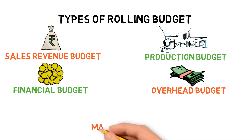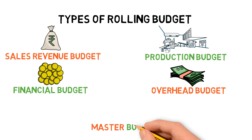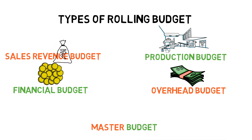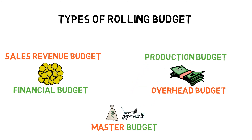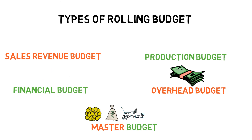And finally, we have a master budget. Master budget means a budget which covers all aspects — that is sales, finance, production, overheads, etc. A rolling master budget can be prepared to represent the updated values of all these.